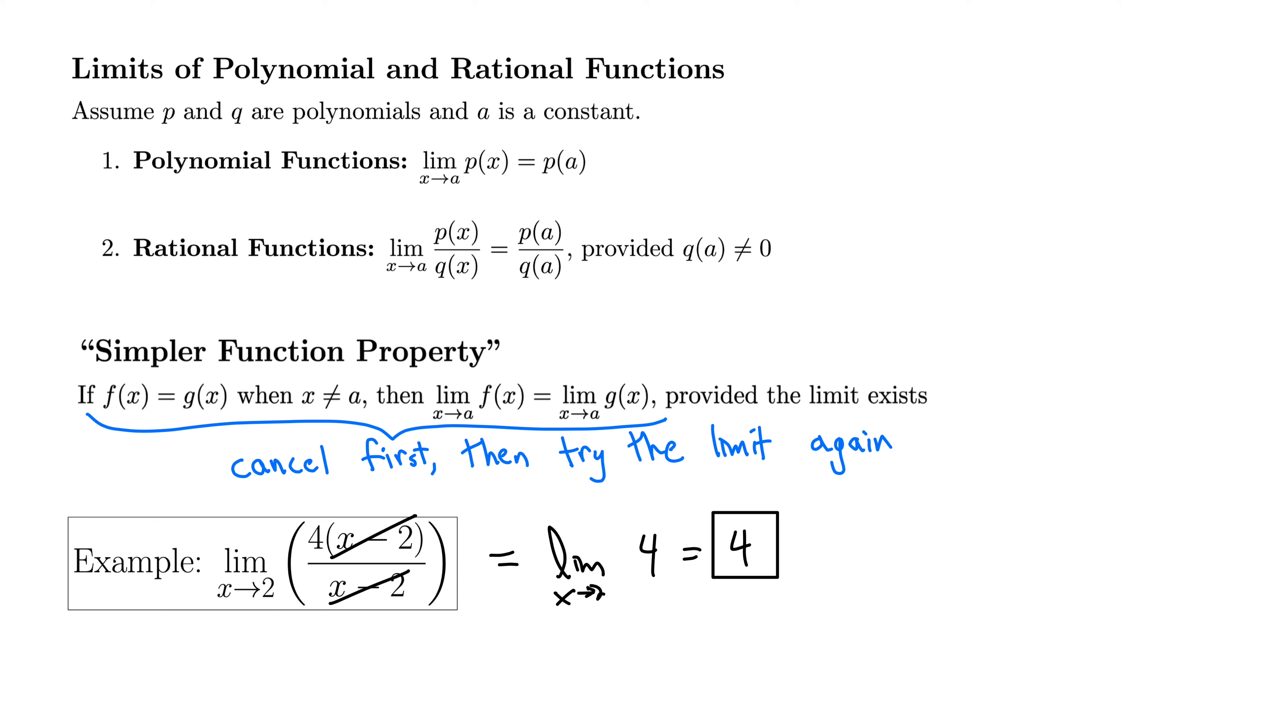So now that we've built up our limit laws, the real key in evaluating all the limits that are in this section is to use the simpler function property and essentially get things to cancel until you can evaluate the limit. So you plug in first, basically using the limit laws that we've learned. If it doesn't work and you get something undefined, then you cancel things out and try again. That's in a nutshell how you approach these more computational limits in this section.